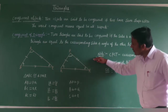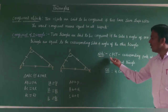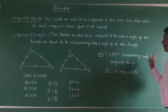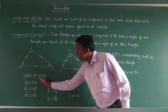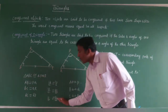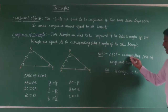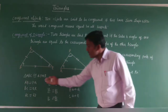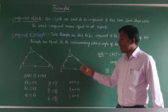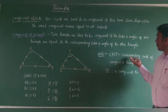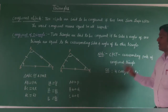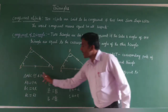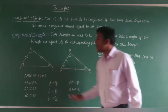Now one important note: we usually use the term CPCT, which stands for Corresponding Parts of Congruent Triangles. The corresponding sides and corresponding angles are the corresponding parts of congruent triangles. The congruent symbol is used when we say these two triangles are congruent.